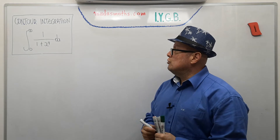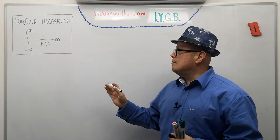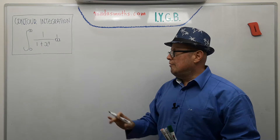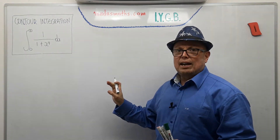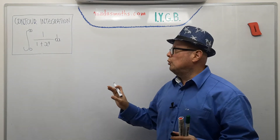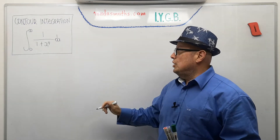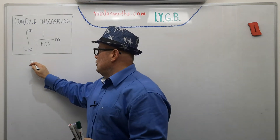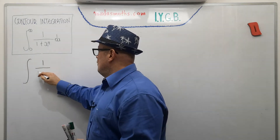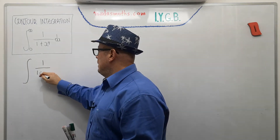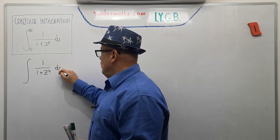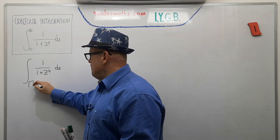So we're going to examine how to do this. I'm going to put a lot of detail again on this video. The function we're going to consider is simply one over one plus z to the four, integrated over a contour gamma.